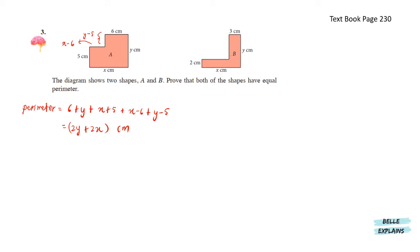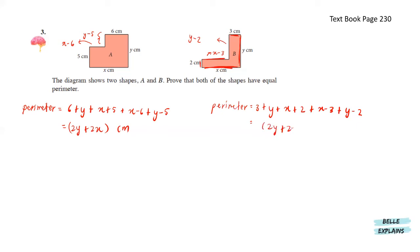Let's move on to shape B. This unknown part over here will be Y minus 2, and this part over here is X minus 3. Now we can find the perimeter since we already know the length of all the sides. We have 3 plus Y plus X plus 2 plus (X minus 3) plus (Y minus 2). By simplifying this, we also get 2Y plus 2X centimeters. Since this perimeter and this perimeter are the same, we can conclude that the perimeter of A equals to the perimeter of B.